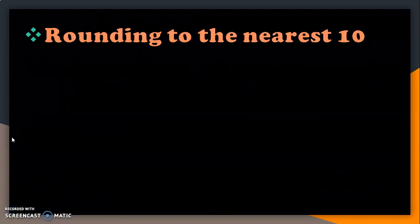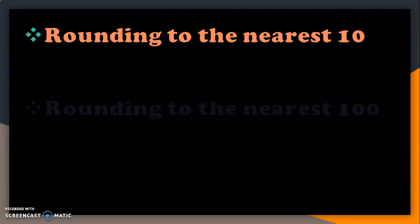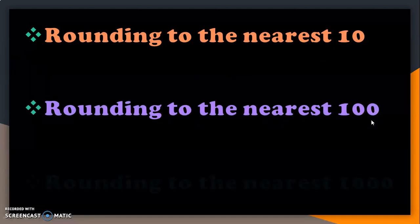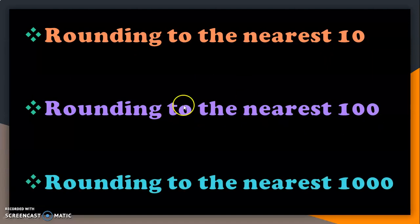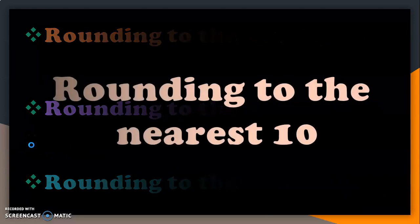Rounding off of numbers is done in three different ways. The first one is rounding to the nearest ten. Next, it is rounding to the nearest hundred. And the third method is rounding to the nearest thousand. Let us see each of these in detail.